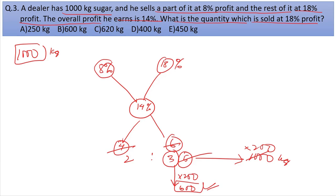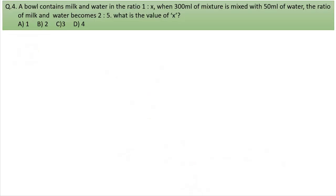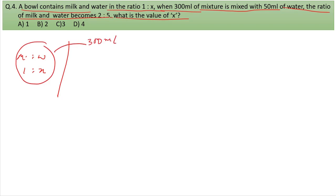Question 4: A bowl contains milk and water in the ratio 1 to X. When 300 ml of mixture is mixed with 50 ml of water, the ratio of milk and water becomes 2 to 5. What is the value of X? Initially, milk to water is 1 to X.